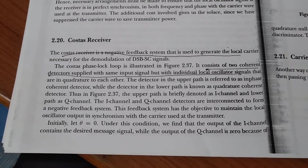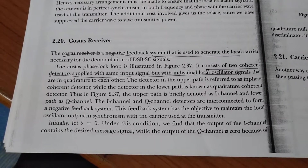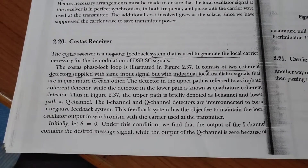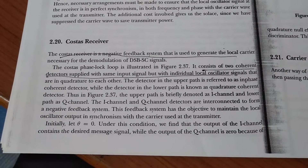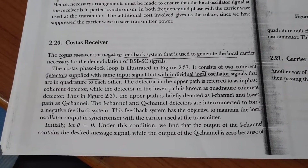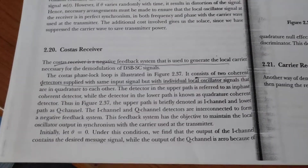Initially, let θ equal 0. Under this condition, we find that the output of the I channel contains the desired DSB-AC signal, while the output of the Q channel is 0 because of the quadrature null effect.